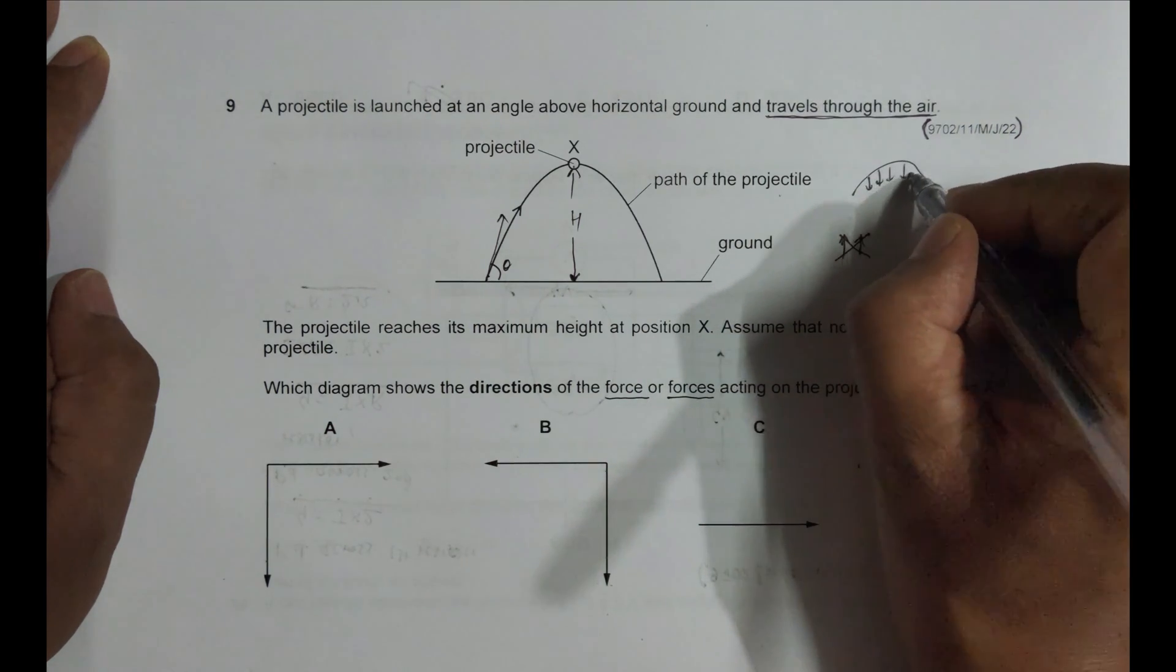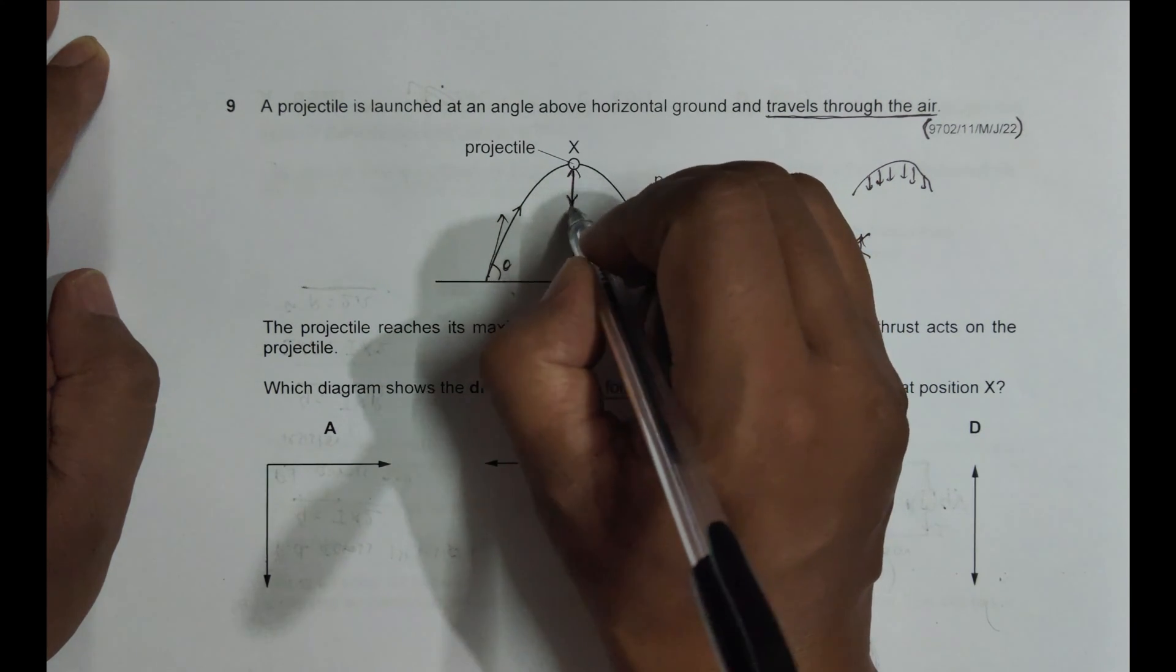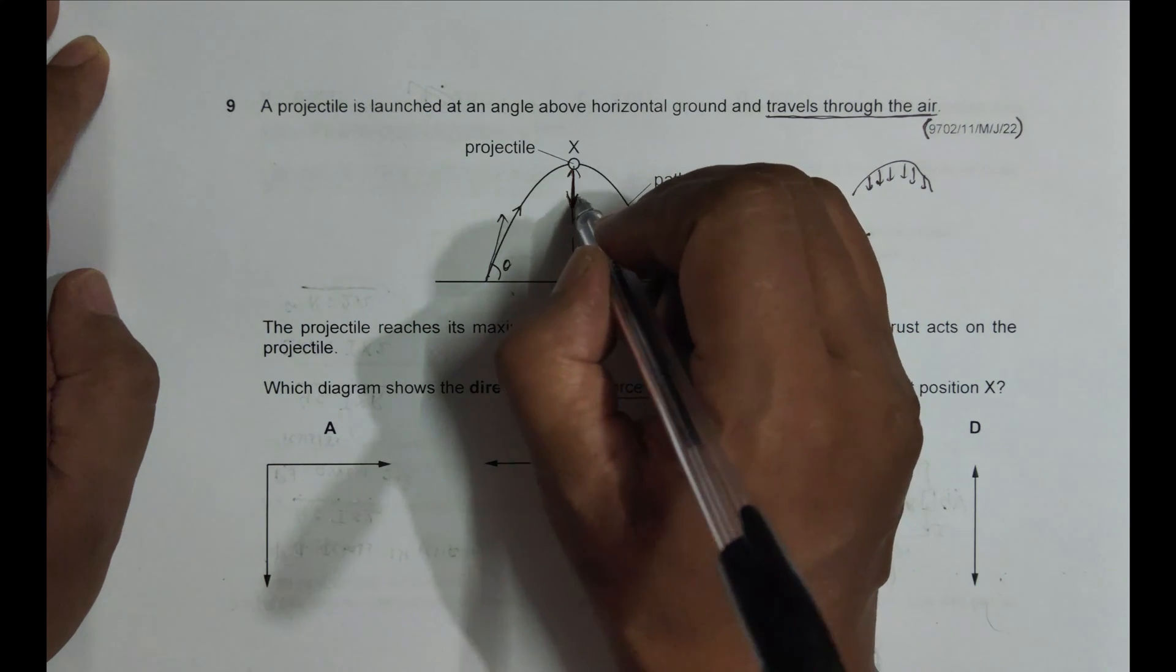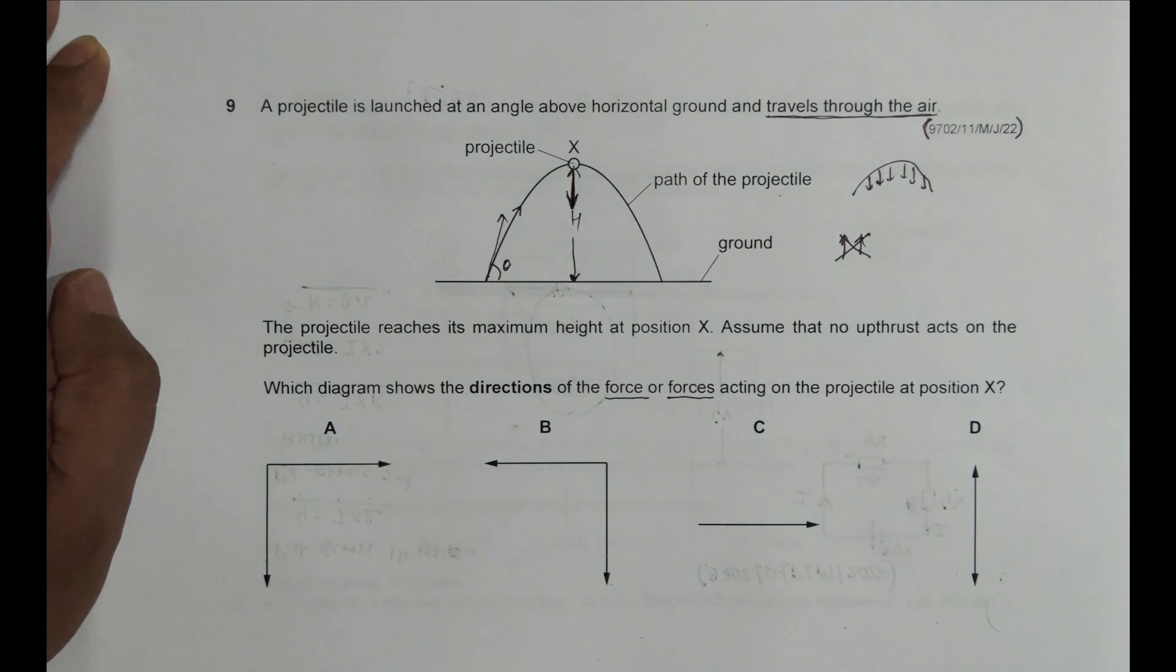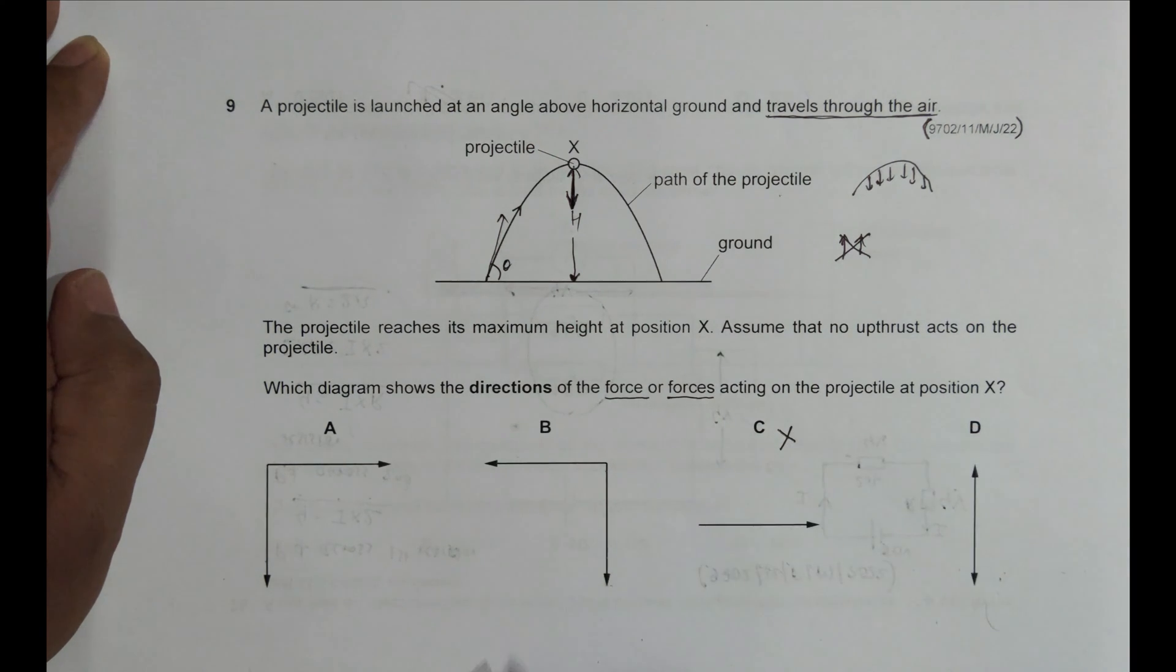In a projectile, everywhere the body is, there will be a force of gravity. So the force of gravity here will be in downward direction like this. So this is the direction of the force downward. Now it means that we have this thing disqualifies.